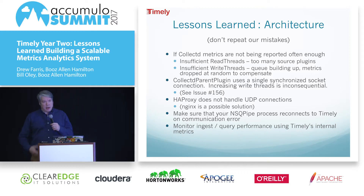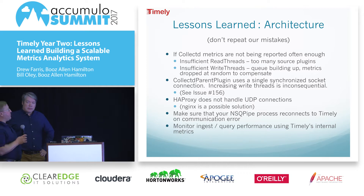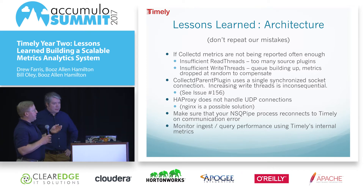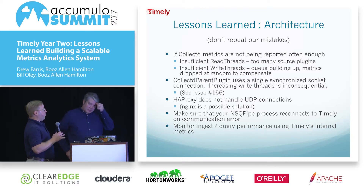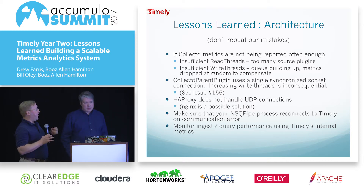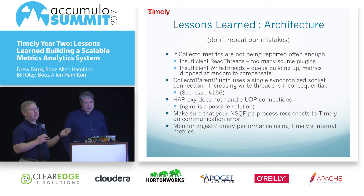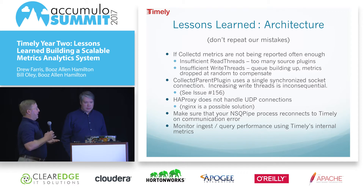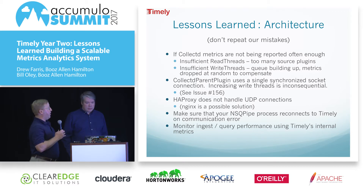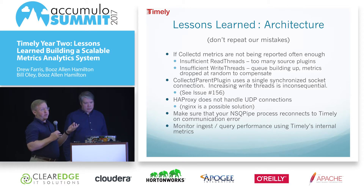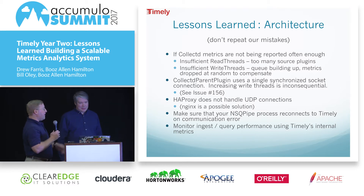Now we'll talk through some lessons learned in the architecture of this process. CollectD is configured through the config file and has read threads and write threads. Read threads are used to read over the source plugins — if some are slow you might have a lag and need to increase read threads. We ran into write thread issues recently: the queue was building up and we were actually getting metrics on our metrics, and saw that the CollectD queue was building up and throwing away random metrics. It hits its maximum threshold and starts randomly ditching metrics to not get overrun. There was synchronization going on in our write plugin — even though we had multiple write threads it was synchronizing around the same socket. We had to rewrite it to use multiple sockets for each write thread to make it actually use those threads. That was taken care of in issue 156.